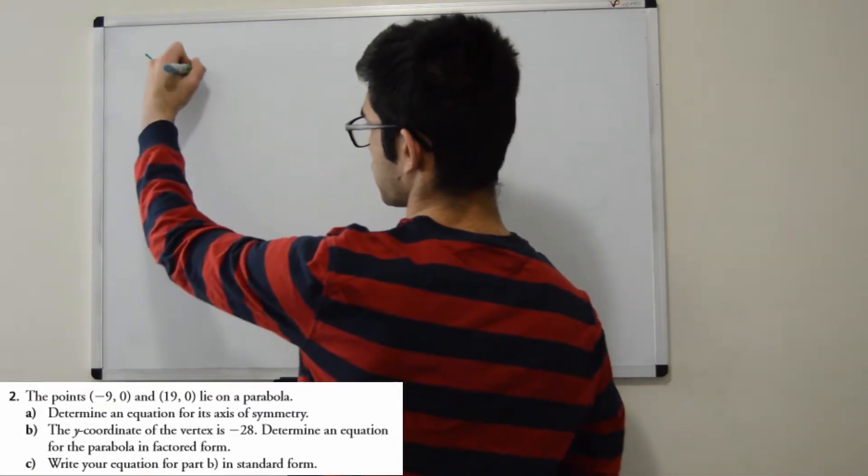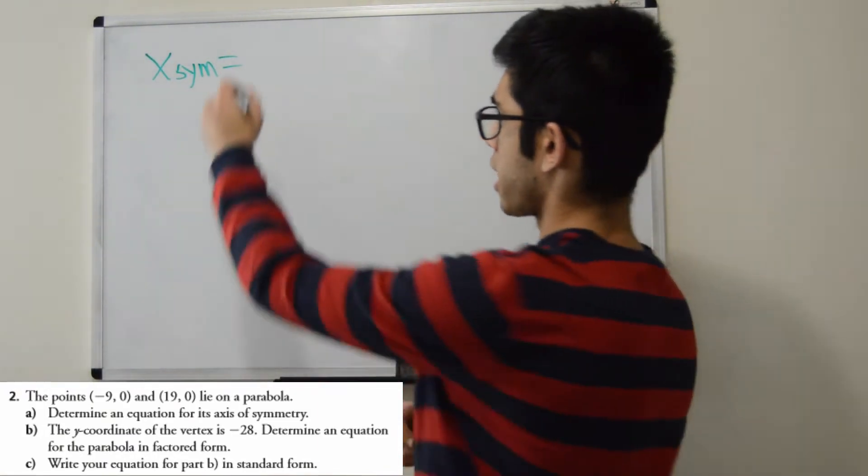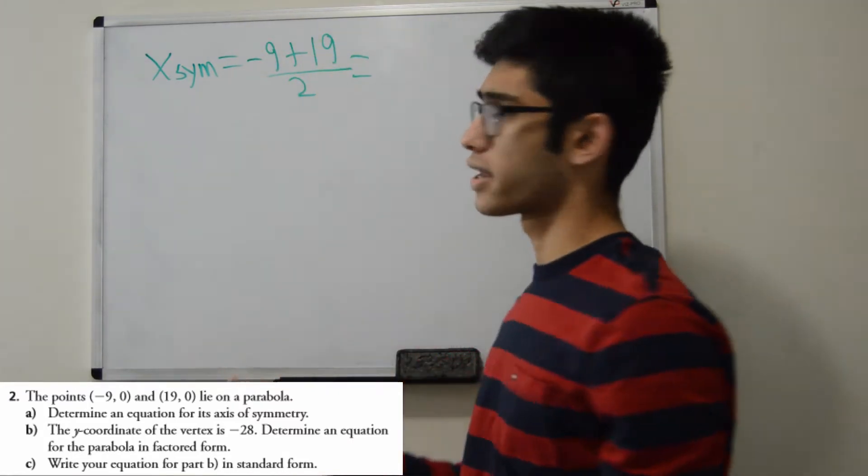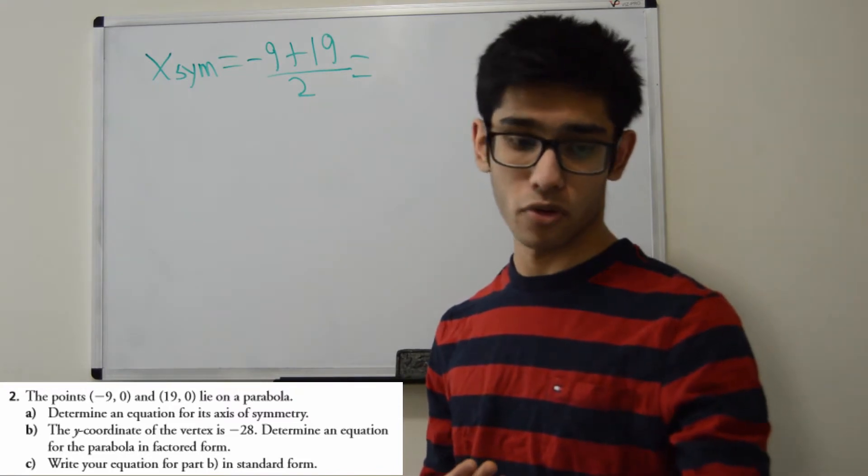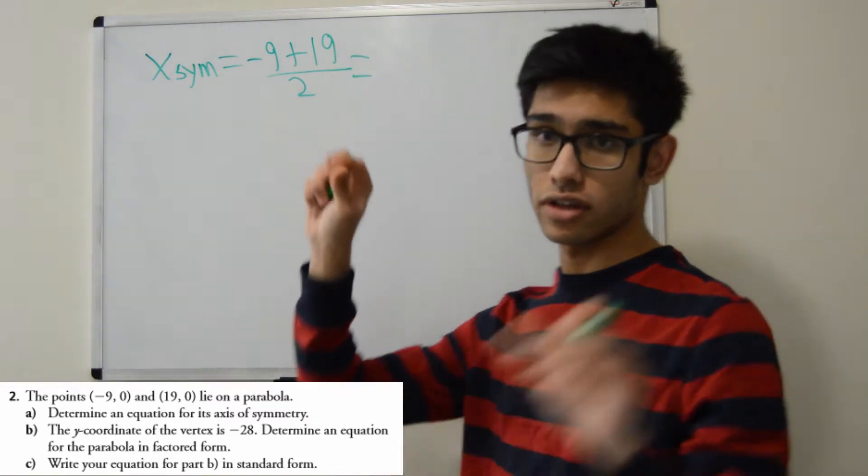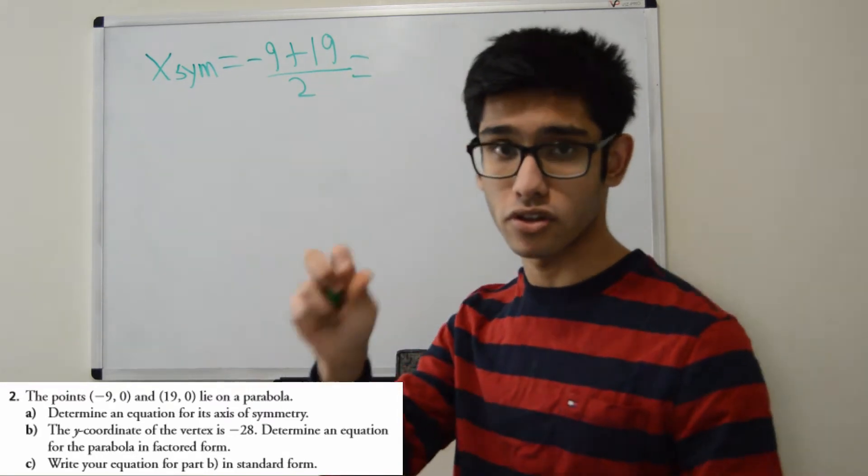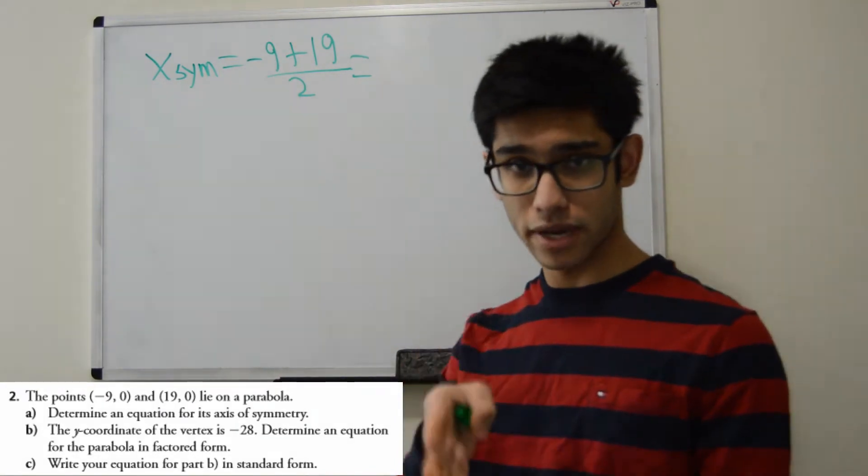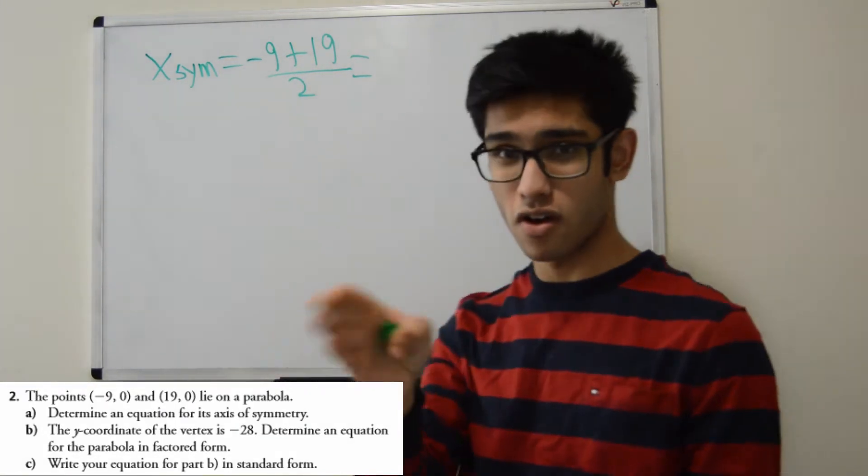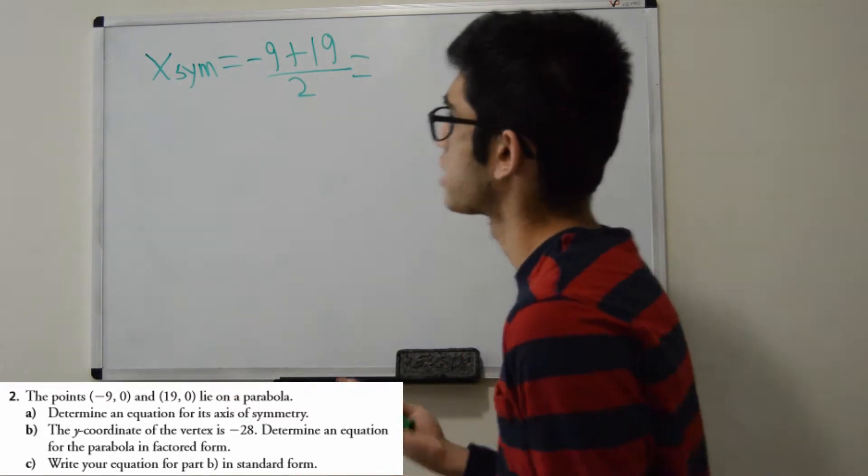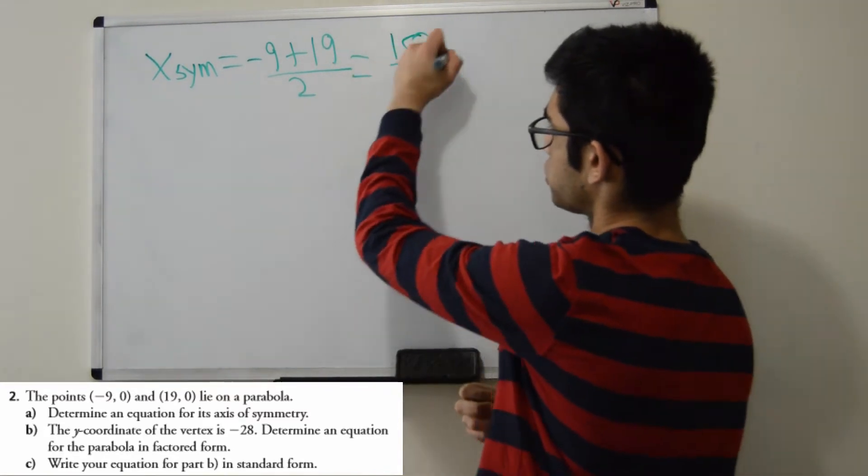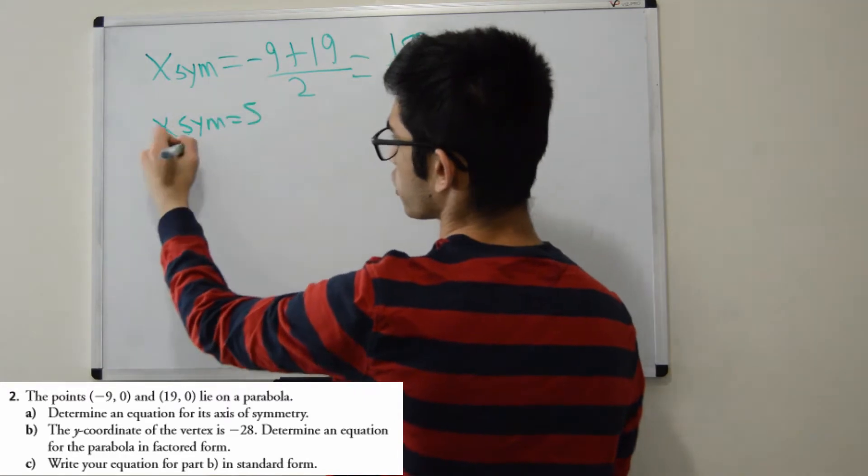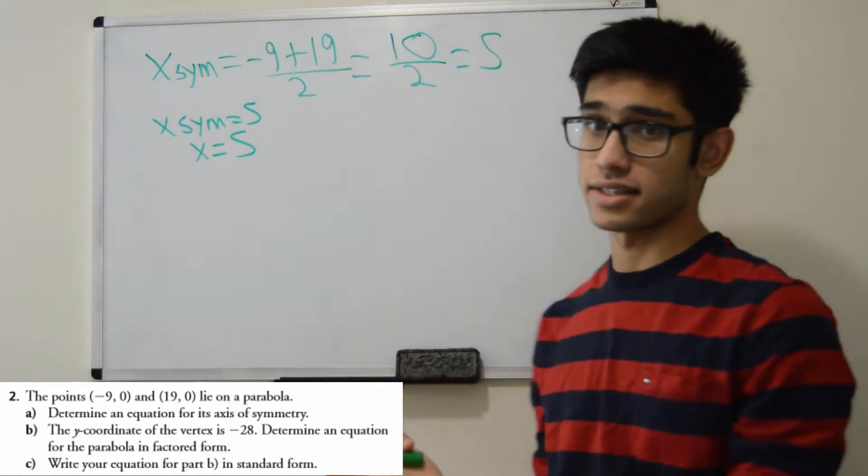Our zeros are -9 and 19, so that's the x values for the two zeros. So my axis of symmetry, x-sim, is -9 plus 19 divided by 2. I'm just adding the two points and I'm trying to find their midpoint, because they're the two zeros and they're on equal sides of a parabola, so I'm just trying to find the middle. -9 plus 19 is 10, 10 divided by 2, well that's just 5.